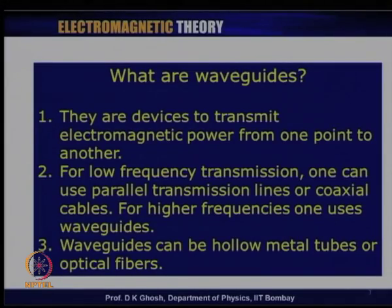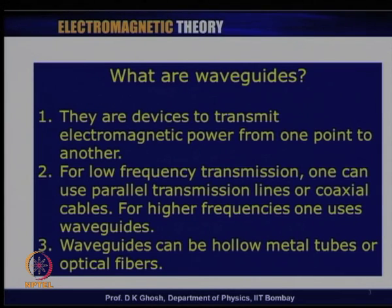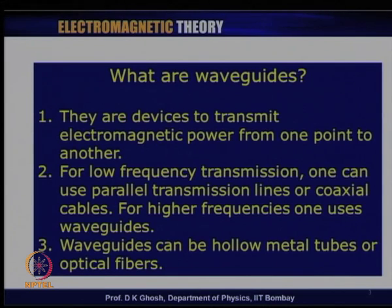A typical waveguide consists of a hollow metal tube, which is one of the ways of transferring power. The other more commonplace today, for example, optical fibers which are widely used today to carry signals — light signals — from one place to another. We will in this lecture be talking primarily about the first part.